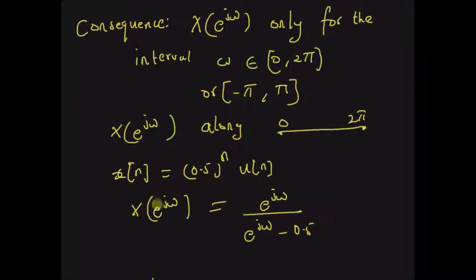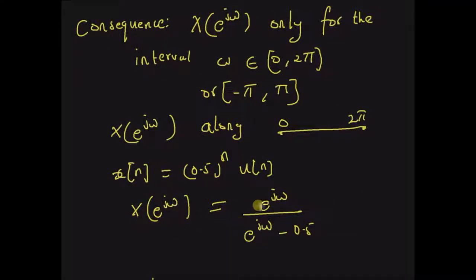This function X(e^jω) = e^jω/(e^jω - 0.5) is a periodic function. Now let us look at a plot that illustrates the periodicity.